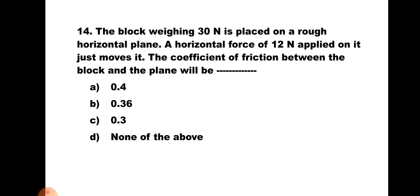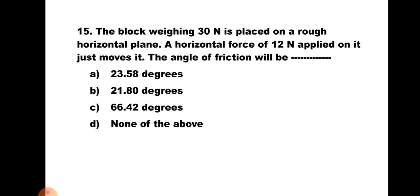Question number fourteen: A block weighing 30 N is placed on a rough horizontal plane. A horizontal force of 12 N applied on it just moves it. The coefficient of friction will be — a) 0.4, b) 0.36, c) 0.3, d) None of the above. Here μ = F/R = 12/30 = 0.4. Hence the correct answer is a) 0.4.